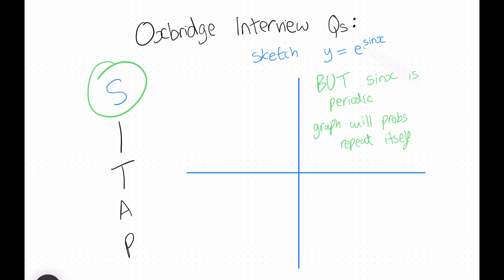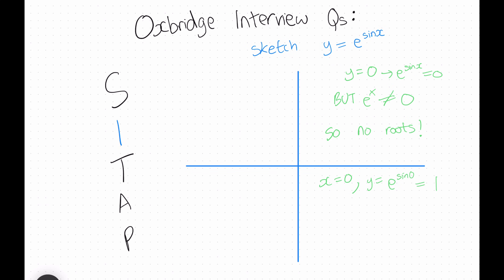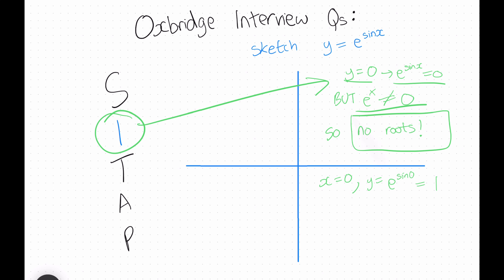Moving on to intersections: when y is 0, e to the sine x must equal 0, but e to the something can never equal zero, so this function has no roots. When x is 0, y equals e to the sine of 0, which is just 1, so we mark that point as the y-intercept.